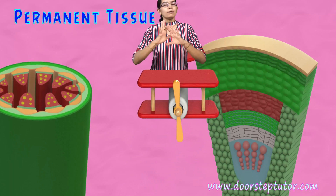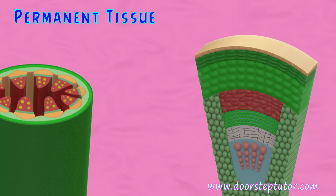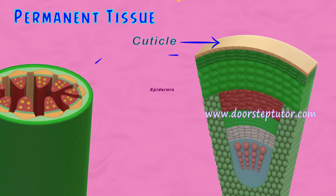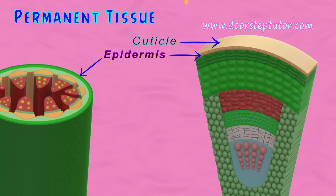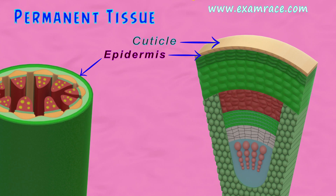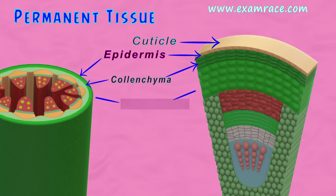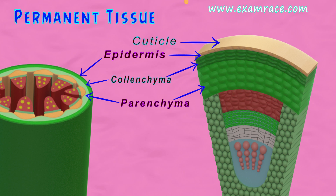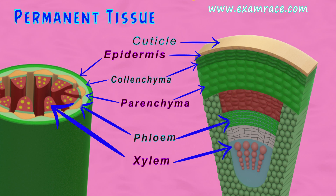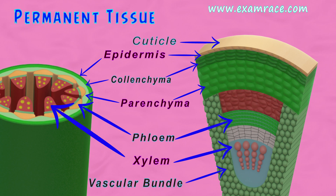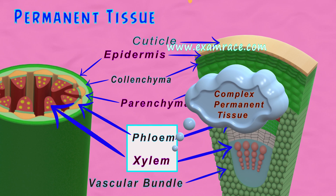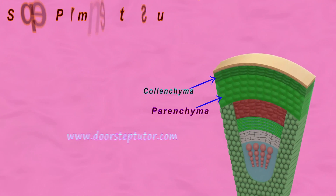Let's understand the diagram of a permanent tissue. The outermost layer is known as the cuticle. Below the cuticle, you have a thin layer which is the epidermis, whose role is to provide a kind of shield. Below the epidermis, you have colenchyma followed by parenchyma. And if we take a cross-section of the plant, we would see xylem and phloem, which are basically the vascular bundles and have their role in conduction. These are part of complex permanent tissue. What we will understand now is the simple permanent tissue.